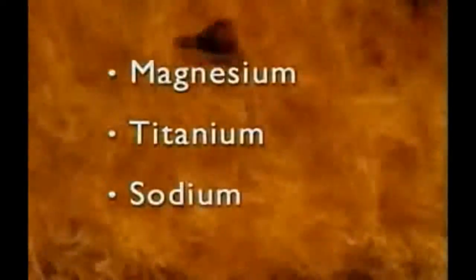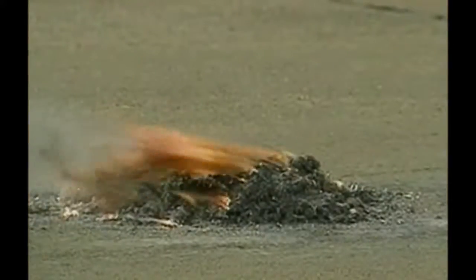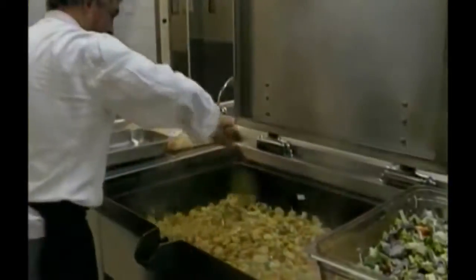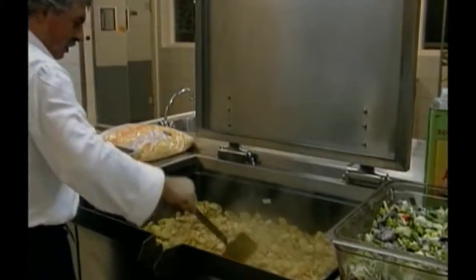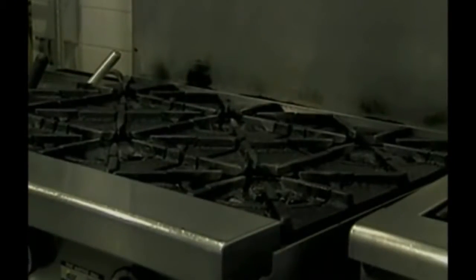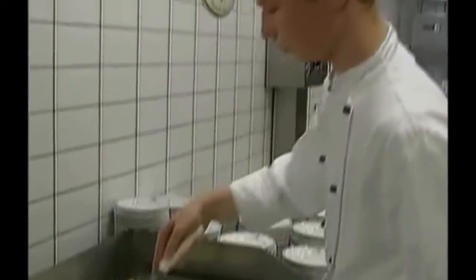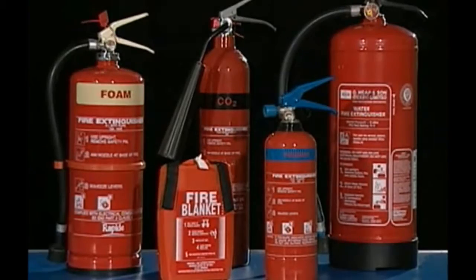Fortunately, most of us will never be involved in a category D fire, as they're only caused by flammable metals. The incredible heat required to start this type of fire makes them extremely dangerous. If you work with flammable metals such as magnesium, titanium, or sodium, make sure you always observe the safety procedures. If your job involves preparing food, take extra care — never leave a pan of oil on the stove unattended, and don't put anything on a burner unless you're sure it won't cause a fire. In large commercial kitchens, make sure there's always a category F fire extinguisher at hand. Never try to put out an oil fire with water, as it will spread.